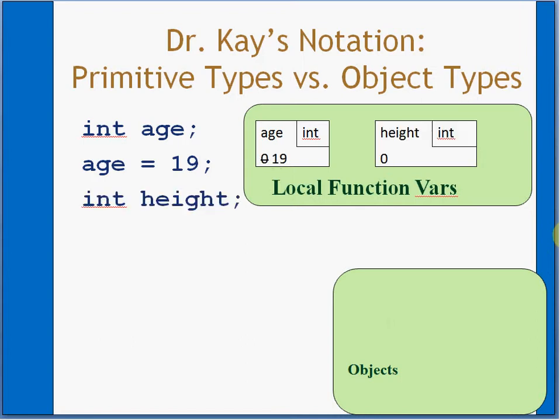Int height, new box. Height gets age. Evaluate the right-hand side, put it in the left. The right-hand side is age, that's this number 19, so we copy that into height. Great.